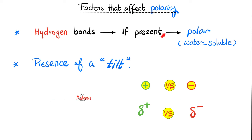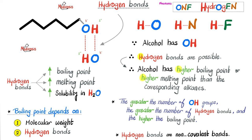If you make hydrogen bonds, you're more likely to be polar and water-soluble. The tilt can be ionic (like NaCl) or polar covalent. Hydrogen bonds can form between hydrogen and oxygen, hydrogen and nitrogen, or hydrogen and fluorine — mnemonic: ONF (or write 'hydrogEn' with the A resembling an F). If you can make hydrogen bonds — like alcohols or carboxylic acids — you will have relatively high boiling point, melting point, and high solubility in water.